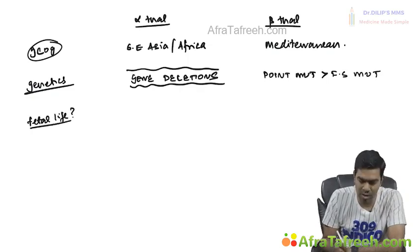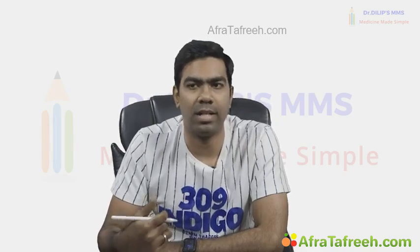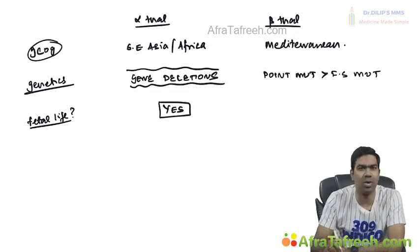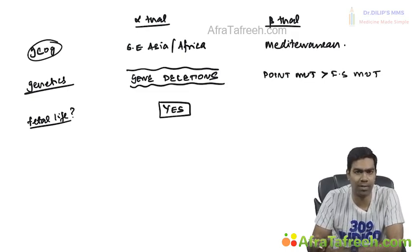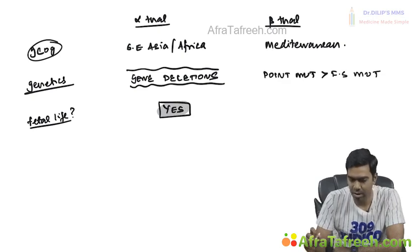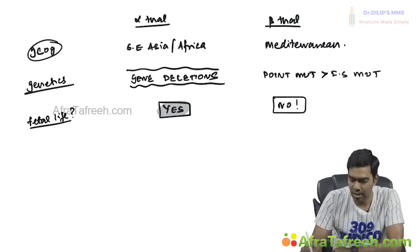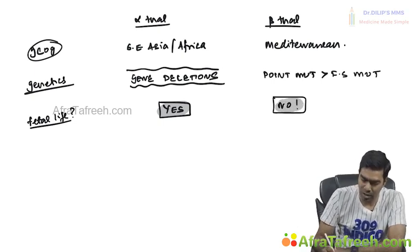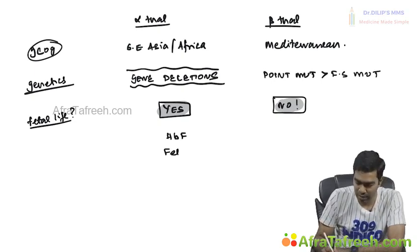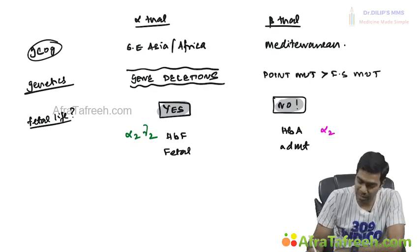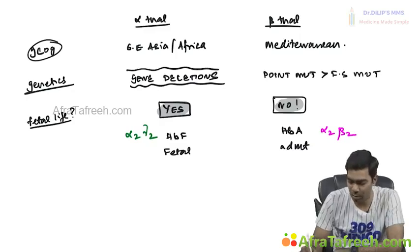Regarding fetal presentation, certain alpha thalassemias, especially all-four-gene deletions, can present in fetal life. Beta thalassemia cannot present in fetal life at all. The reason is that fetal hemoglobin HbF is alpha-2 gamma-2, while adult hemoglobin HbA is alpha-2 beta-2. Both HbF and HbA require alpha chains.